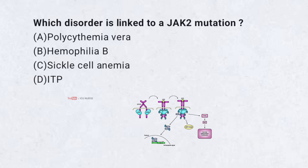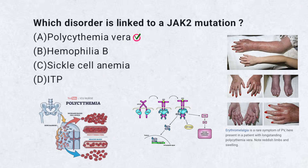Which disorder is linked to a JAK2 mutation? A. Polycythemia vera, B. Hemophilia B, C. Sickle cell anemia, D. ITP. Correct answer: A. Polycythemia vera. Most polycythemia vera cases have a JAK2 V617F mutation causing uncontrolled RBC production.